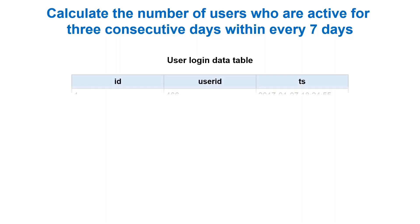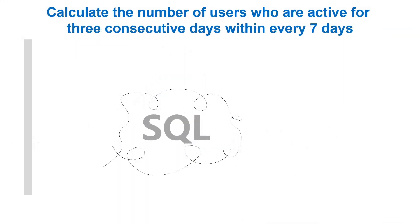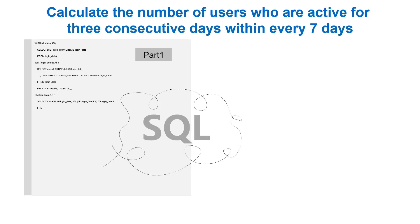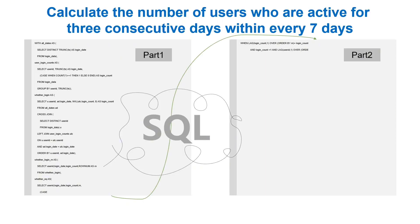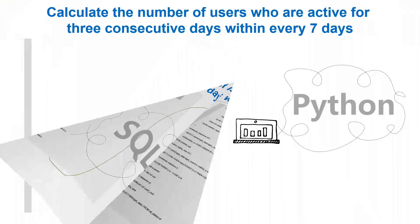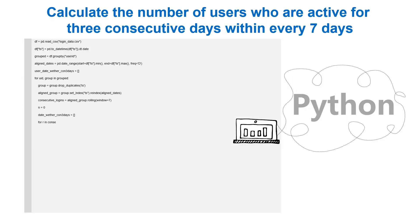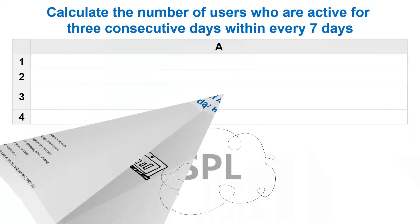User Login Data Table. Calculate the number of users who are active for 3 consecutive days within every 7 days. The SQL. Then Python. And SIPL.